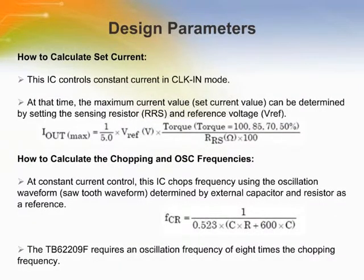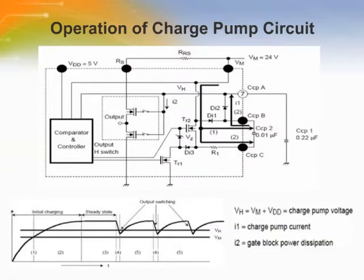Key design parameters to consider — how to calculate set current and calculate the chopping and oscillating frequencies — are shown. When reset is released, TR1 is turned on and TR2 is turned off. CCP1 is charged from CCP2 via DI1. When TR1 is turned off and TR2 is turned on, CCP1 is charged from CCP2 via DI2. When the voltage difference between VM and VH, or CCP8 pin voltage, equals charge pump voltage and reaches VDD or higher, operation halts. CCP1 charge is used at FCHOP switching and the VH potential drops. It is recommended that the ratio between CCP1 and CCP2 is 10 to 1 or more.